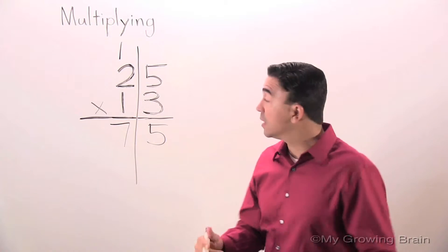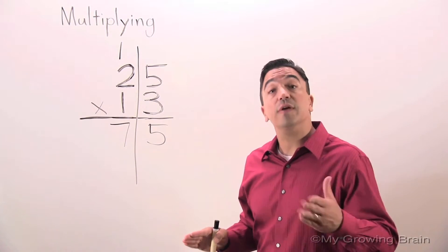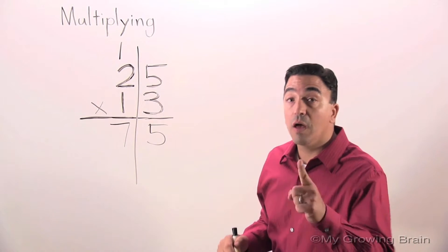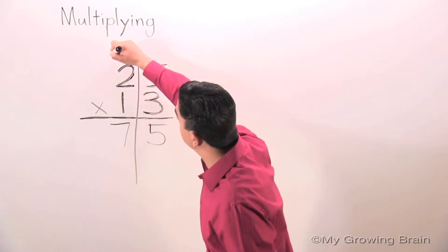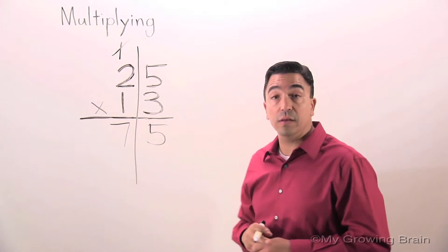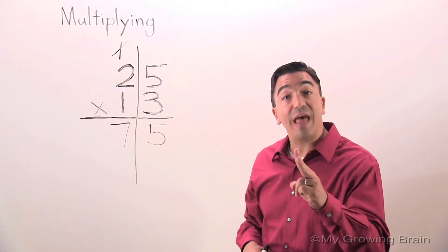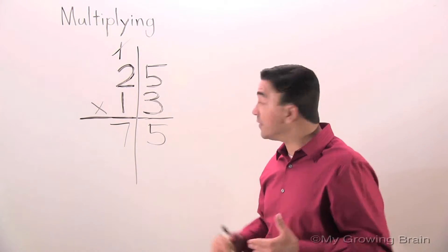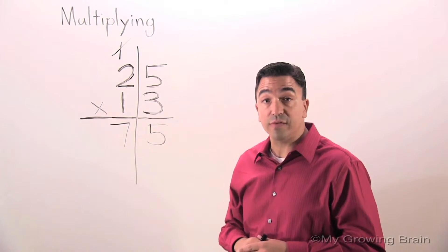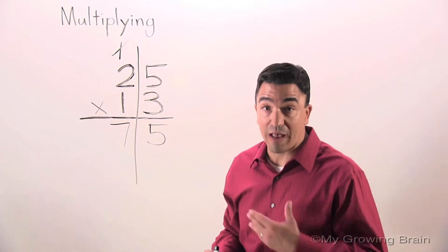Now, before I multiply the one in the tens place, there's a couple things I need to do. First thing, I want to cross out this one because I don't want that one to interfere with my problem. Second, since I'm multiplying in the tens place, I need a placeholder. I'm going to use a zero as my placeholder.